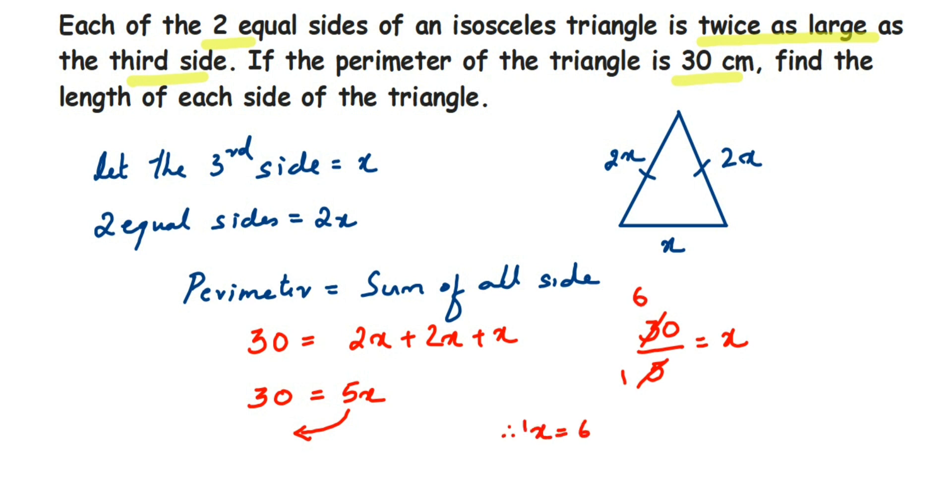So if x value is equal to 6, means the third side is equal to 6 cm. And the other two sides, other two sides value is 2x, which means 2 into 6, which is equal to 12, 12 cm. So each side will be 12 cm. The equal sides will be of 12 cm.